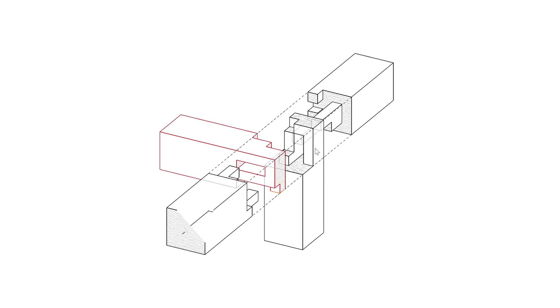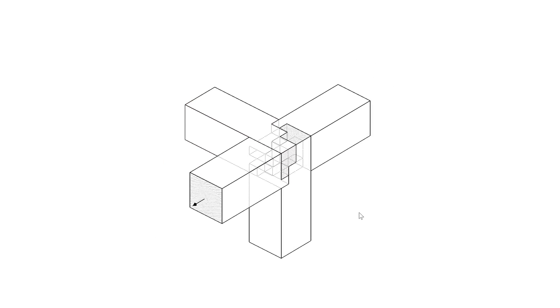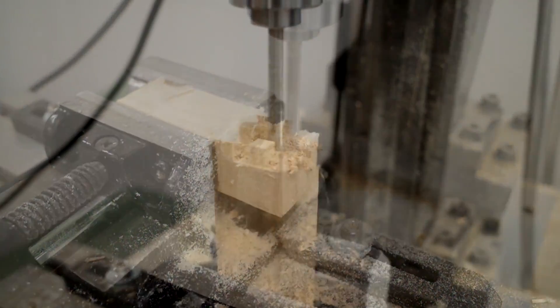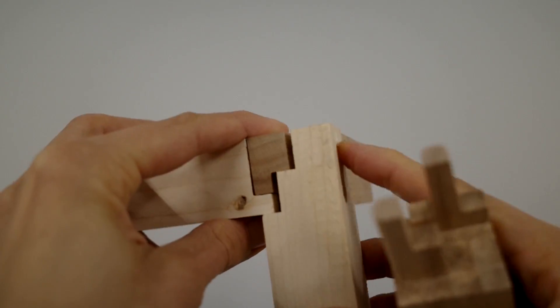We present Tsugite, an interactive computational system to design wooden joinery that can be fabricated using a 3-axis CNC milling machine.